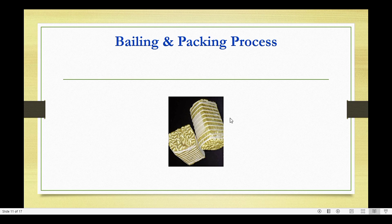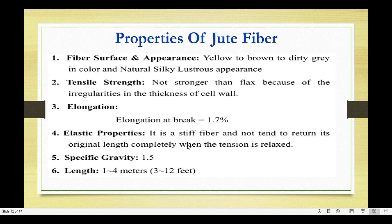Properties of jute fiber: first, fiber surface and appearance — yellow to brown to dirty gray in color with a natural silky luster. Second, tensile strength — not stronger than flax due to irregularities in thickness of cell wall. Third, elongation at break is 1.7%. Fourth, elastic property — it is a stiff fiber and does not return to its original length completely when tension is relaxed. Specific gravity is 1.5, and length is 1 to 4 meters (3 to 12 feet).